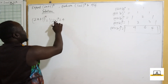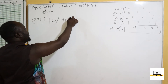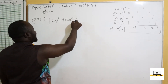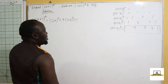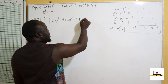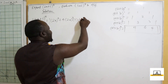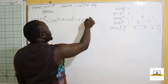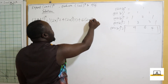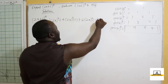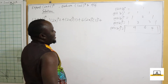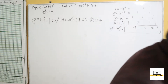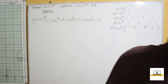We reduce the power of 2x by 1, giving (2x)^3, and increase the power of 1 by 1, giving (1)^1. Then the next coefficient is 6: we have 6 times (2x)^2 times (1)^2.